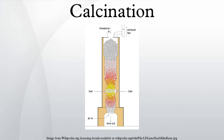This treatment brings about thermal decomposition, phase transition, or removal of a volatile fraction. The calcination process normally takes place at temperatures below the melting point of the product materials.